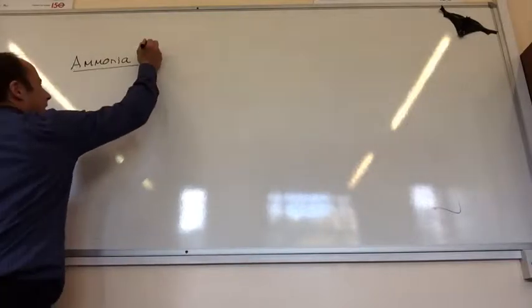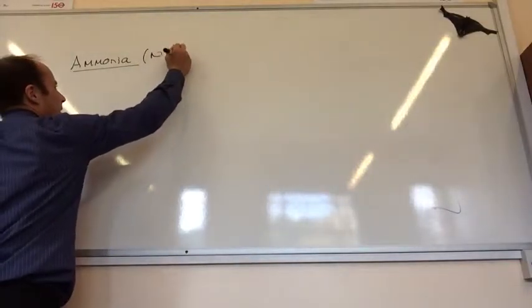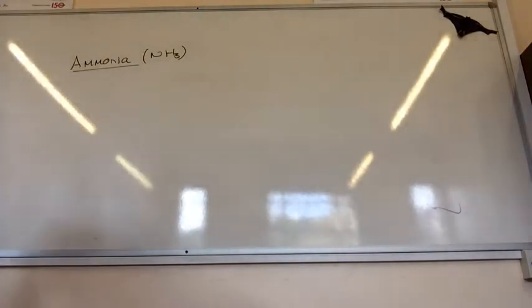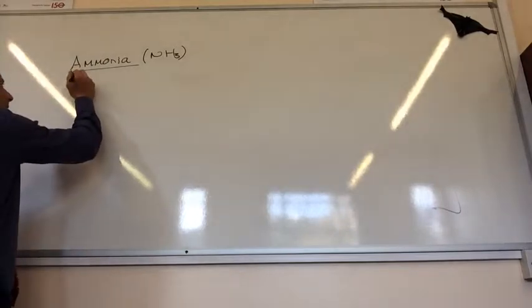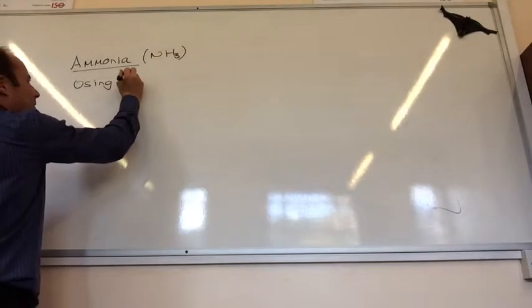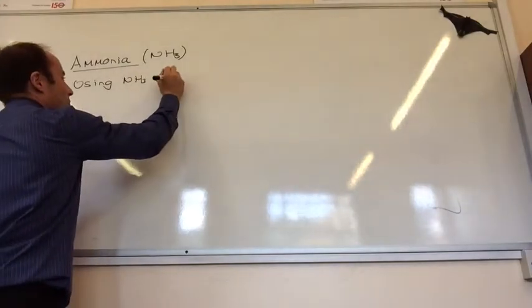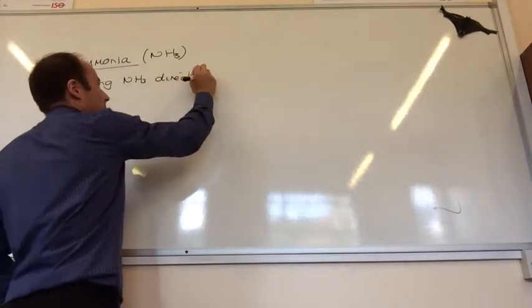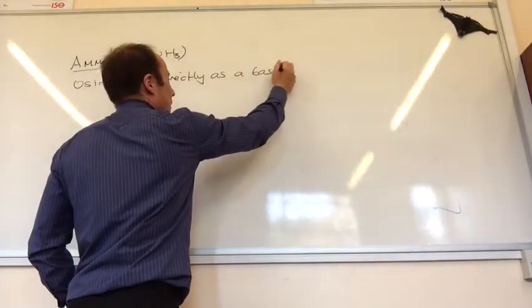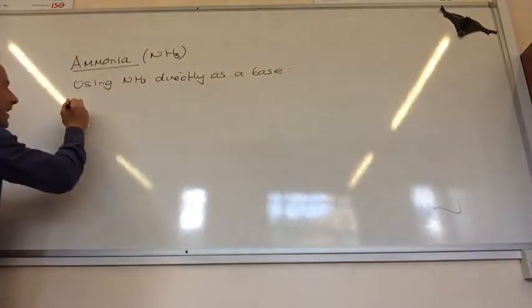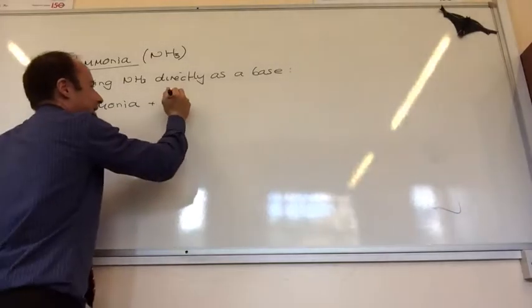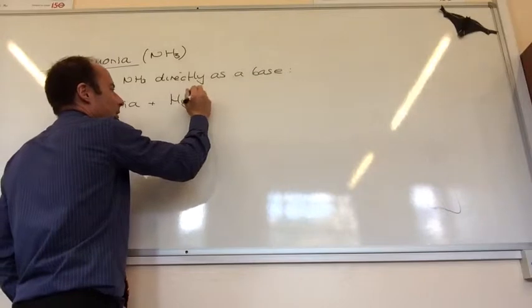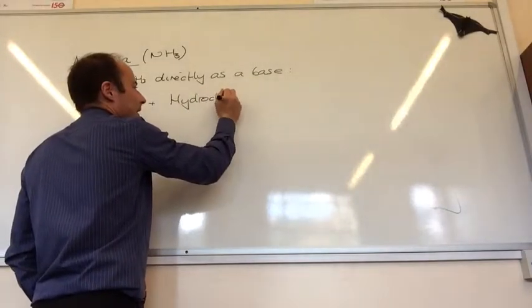Ammonia is the NH3 molecule. There are two ways that you can use ammonia. You can use ammonia directly as a base. Using NH3 directly as a base works like this: you take ammonia and react it with your acid — in this case, hydrochloric acid.